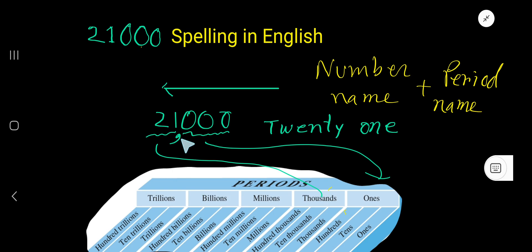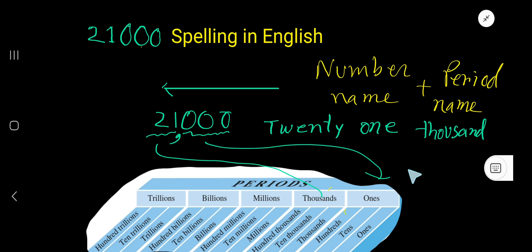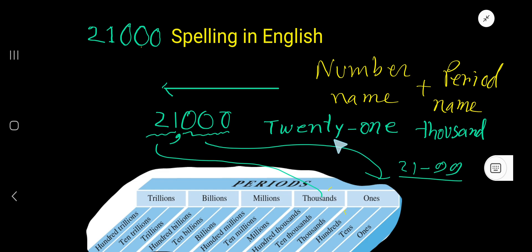21 is in the thousands period. This comma indicates the period — thousand: T-H-O-U-S-A-N-D. For numbers from 21 to 99, we use a hyphen. So 21,000 is written as twenty-one thousand.